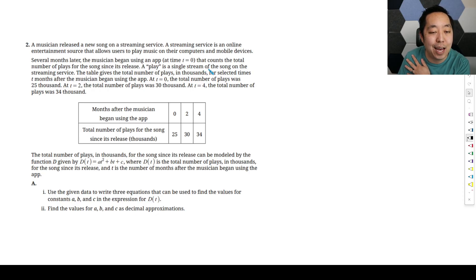Several months later, the musician begins using an app that counts the total number of plays for a song since the release. A play is a single stream of a song in the streaming service. The table gives the total number of plays in thousands for selected times after the musician began using the app. At t equals zero, the total number of plays was 25,000, t equals two is 30,000, t equals four was 34,000.